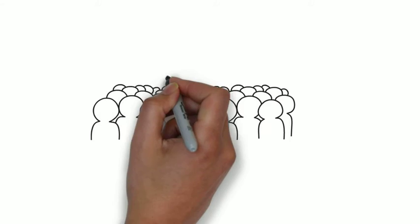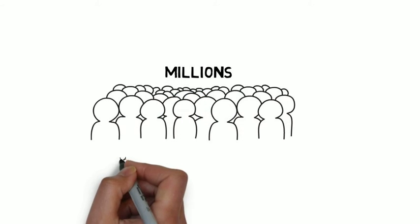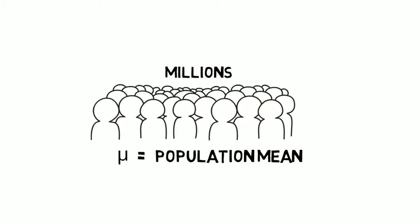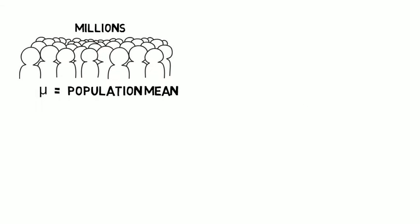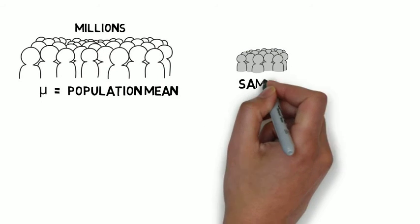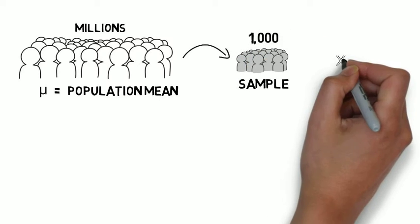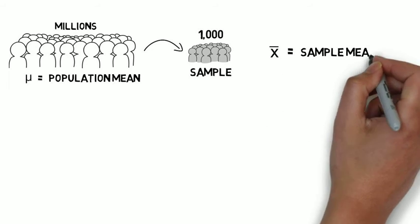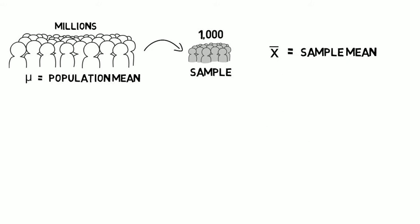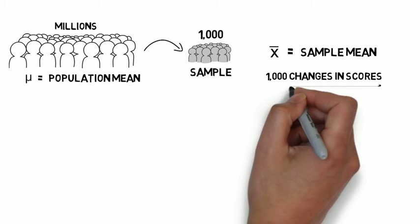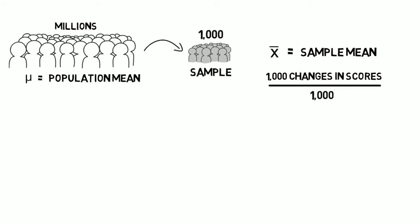But it would take a long time to measure changes of millions of scores, which would give us our population mean. So, what we're going to do is take a sample out of the millions of about 1,000 and find out what 1,000 people did. And that's called the sample mean, x-bar. We're going to take 1,000 changes of scores, divide it by 1,000, and find what the average increase in scores was.